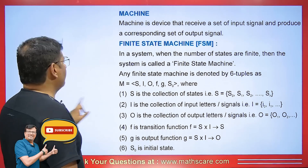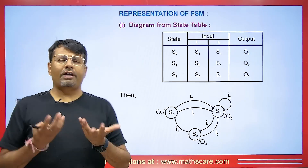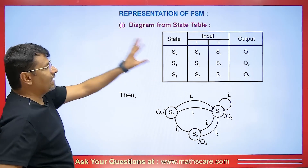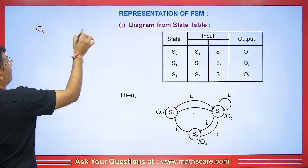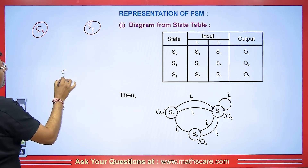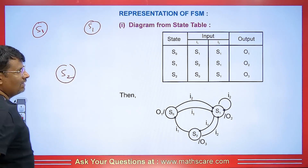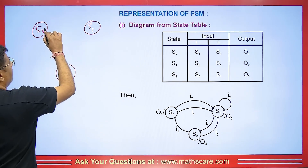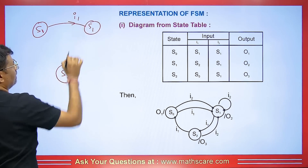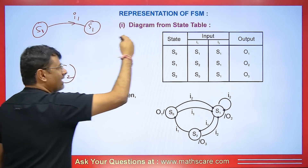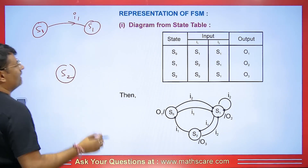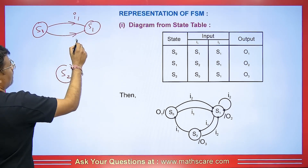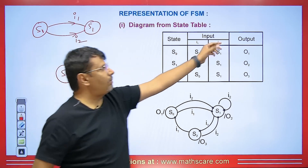Let me explain with an example. In your exam, a table will be given and you have to draw the corresponding diagram. We represent each state mentioned in the table as S0, S1, S2. When the machine transitions from S0 to S1, the input is I1. Similarly, when the machine transitions from S0 to S1 again with input I2, we mark it as I2. In both cases, the output is O1.